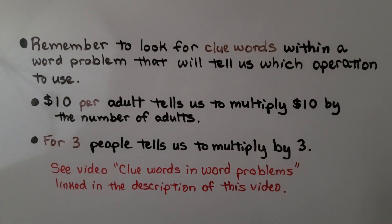Remember to look for clue words within a word problem that will tell us which operation to use. $10 per adult tells us to multiply $10 by the number of adults. For 3 people tells us to multiply by 3. And you can see the clue words and word problems video that I'm going to have linked in the description of this video to help you.